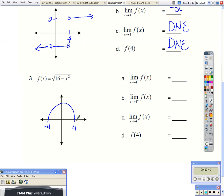So the limit as x approaches 4 from the right, the graph does not exist over here, so this would be does not exist. As we approach 4 from the left, the graph does exist, so the y value from the left, we approach 0. Those don't match, so the limit does not exist. And f of 4 is 0.